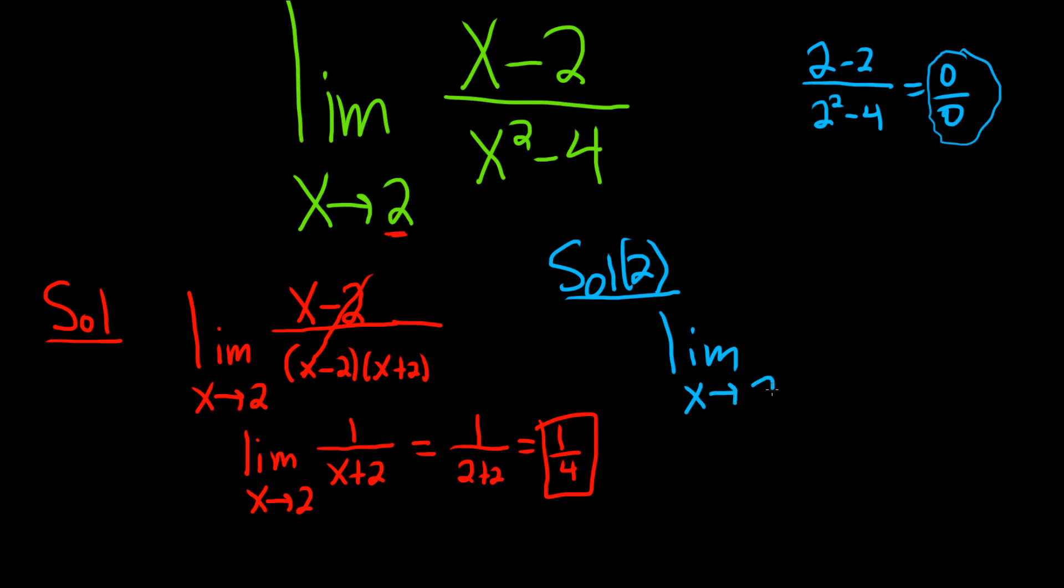So you have the limit as x approaches 2. And L'Hopital's just says you can take the derivative of each piece. So the derivative of x minus 2 is just 1. And the derivative of the bottom piece is just 2x. That's because the constants will be 0 when you differentiate.